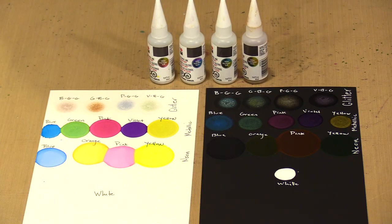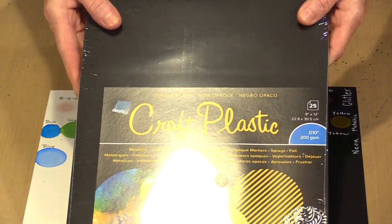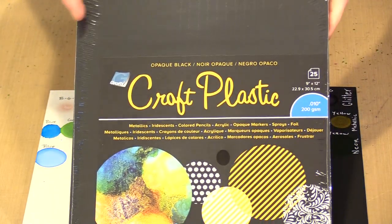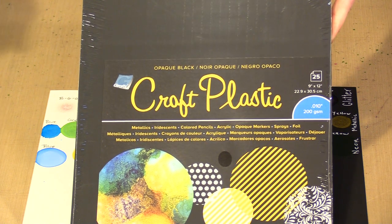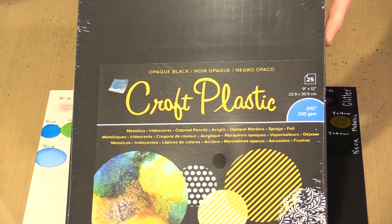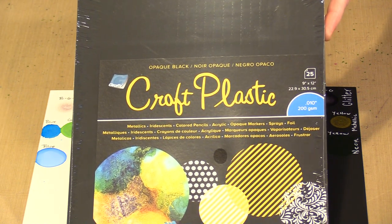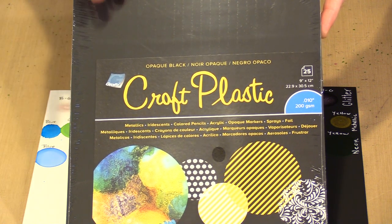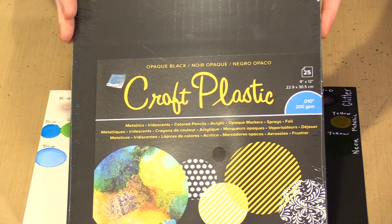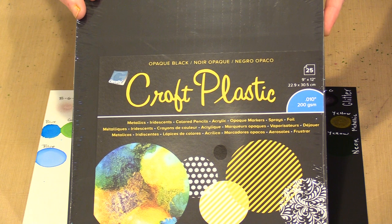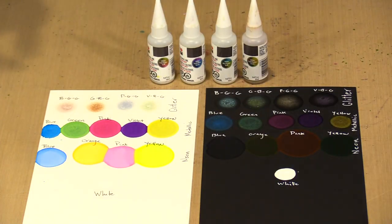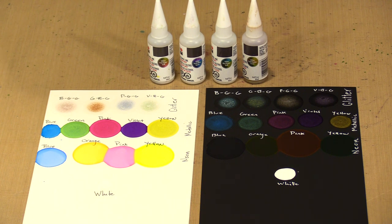Also brand new today is this opaque black plastic from Graphics. This is just like the opaque white plastic that you've become familiar with, and it's so much less expensive than Yupo, except that now it's in black. We have this 9x12 size that's 25 sheets, a 12x12 25 sheet pack, and a 12x12 4 sheet pack.